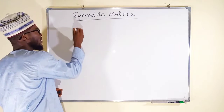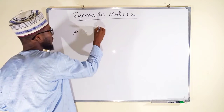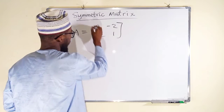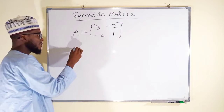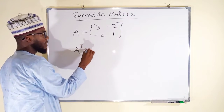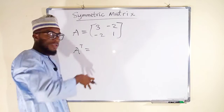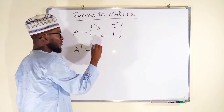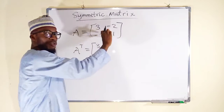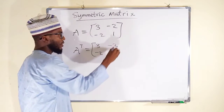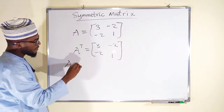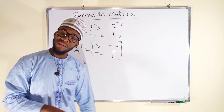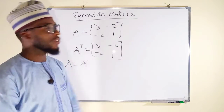Suppose we have a matrix A with entries 3, negative 2, negative 2, and 1. Let us find the transpose. A-transpose: take the rows and interchange them into columns. We get 3, negative 2 in the first column, and negative 2, 1 in the second column. You can see that A is exactly equal to A-transpose, and hence it is said to be symmetric.